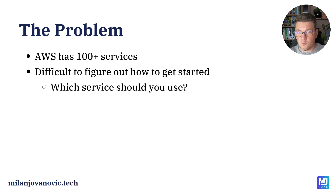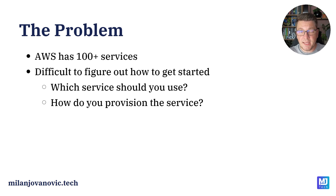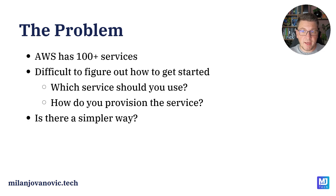You might be confused about which services you should use to run your application, and you probably won't be able to figure out how to provision these services. In the teams I worked on, we usually had a dedicated DevOps engineer responsible for setting up an AWS environment, and then we could just deploy our code through a CI-CD pipeline. However, many teams don't have the luxury of a dedicated DevOps engineer, so they also have to wear the DevOps hat. So the question is: is there a simple way to deploy a .NET application to AWS cloud?